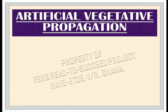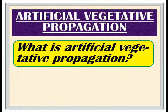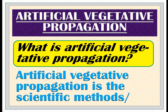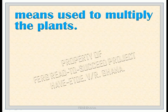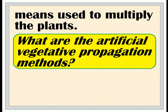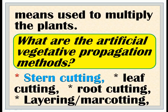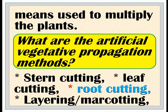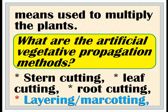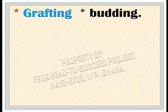Artificial vegetative propagation: What is artificial vegetative propagation? Artificial vegetative propagation is the scientific methods or means used to multiply plants. The artificial vegetative propagation methods are: stem cutting, leaf cutting, root cutting, layering, grafting, budding.